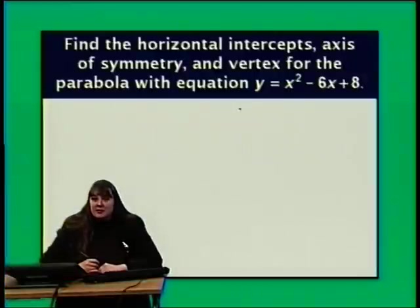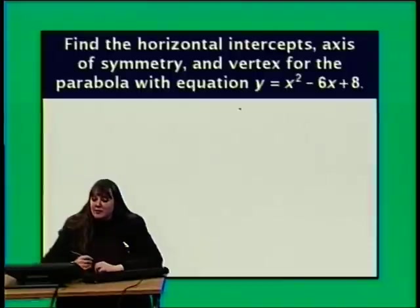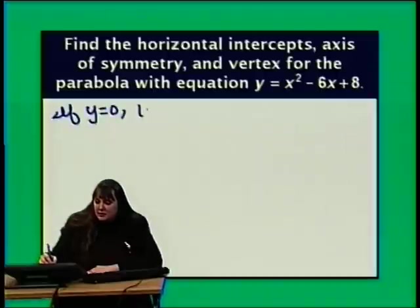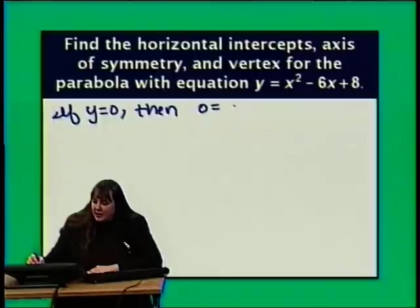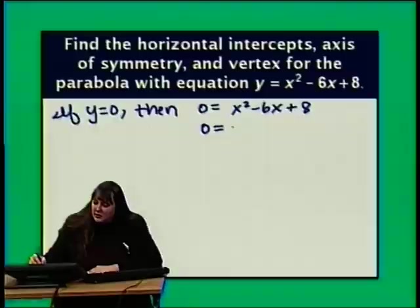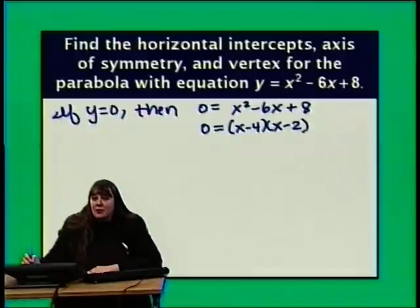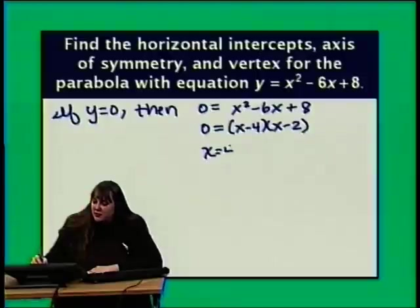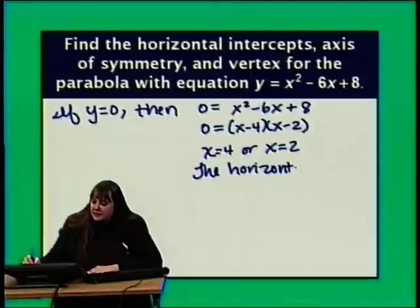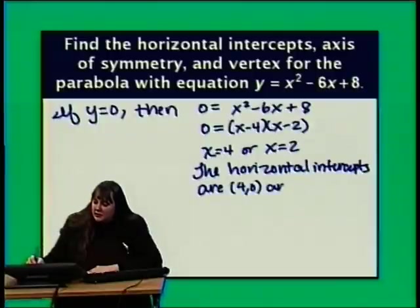Let's find the horizontal intercepts, axis of symmetry, and vertex for the parabola y equals x squared minus 6x plus 8. Setting y equals 0: 0 equals x squared minus 6x plus 8, which factors as (x minus 4)(x minus 2). Since negative 4 times negative 2 equals 8 and negative 4 plus negative 2 equals negative 6, the zero product property gives x equals 4 or x equals 2. The horizontal intercepts are (4, 0) and (2, 0).